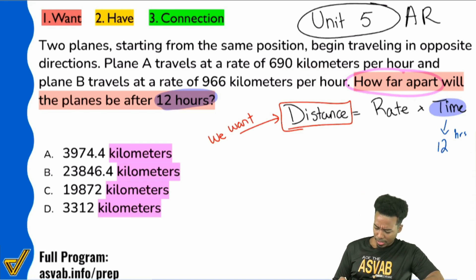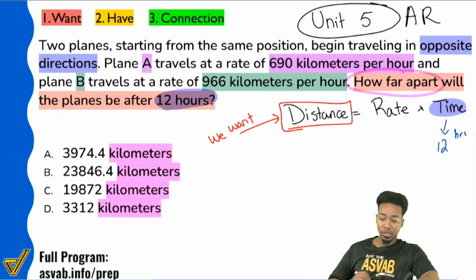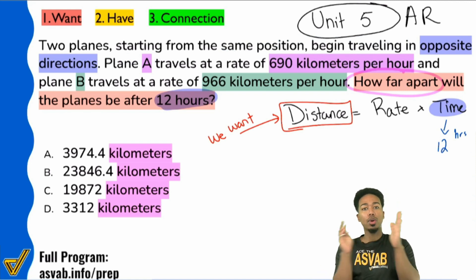First of all, plane A, 690 kilometers per hour and then plane B, 966 kilometers per hour. I see my people that have been in the course who've been to my classes on distance rate time. I see y'all. Exactly. So boom, that's the key there. The big key of this problem for those of you that haven't been to these classes is this. Let me highlight this. Opposite directions.